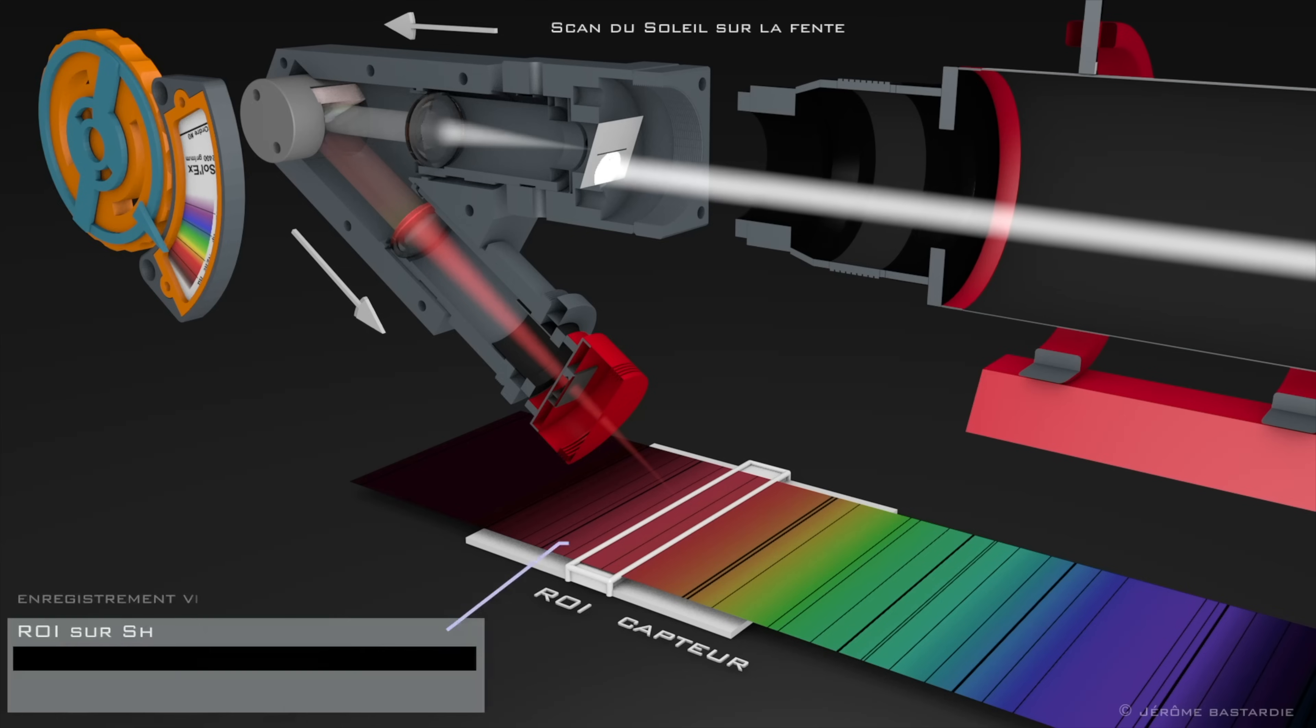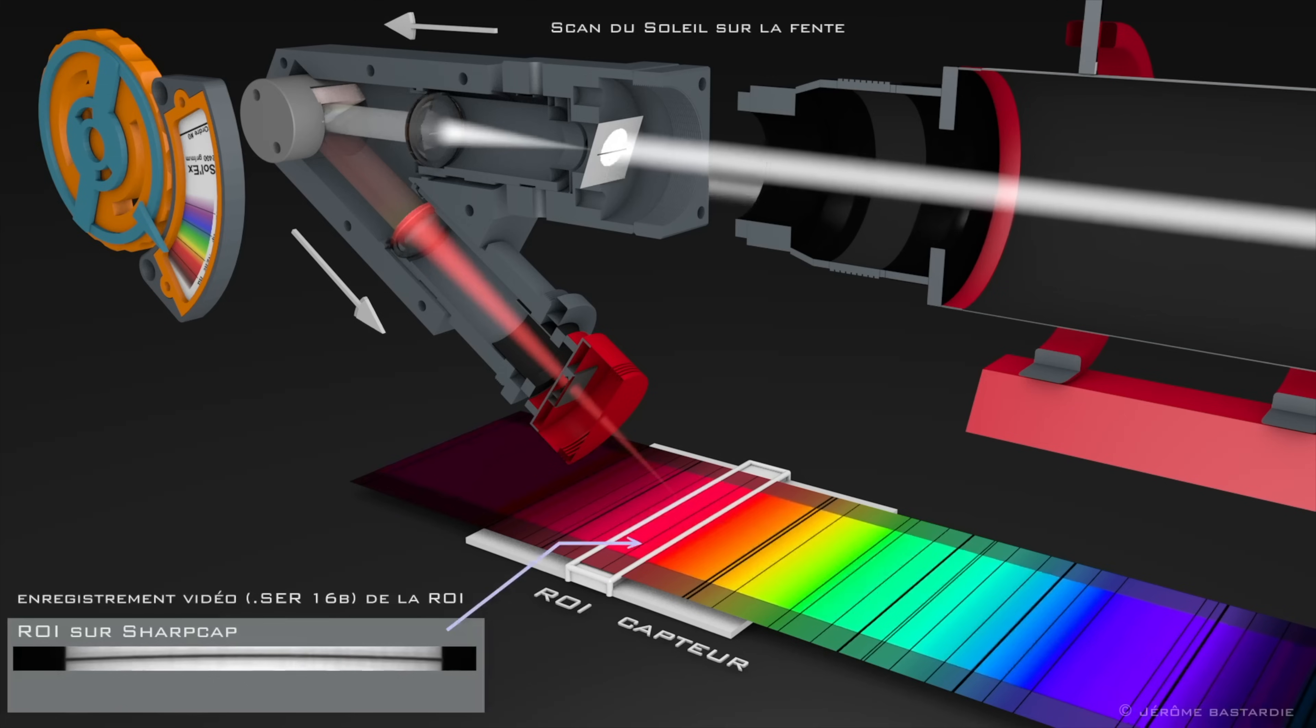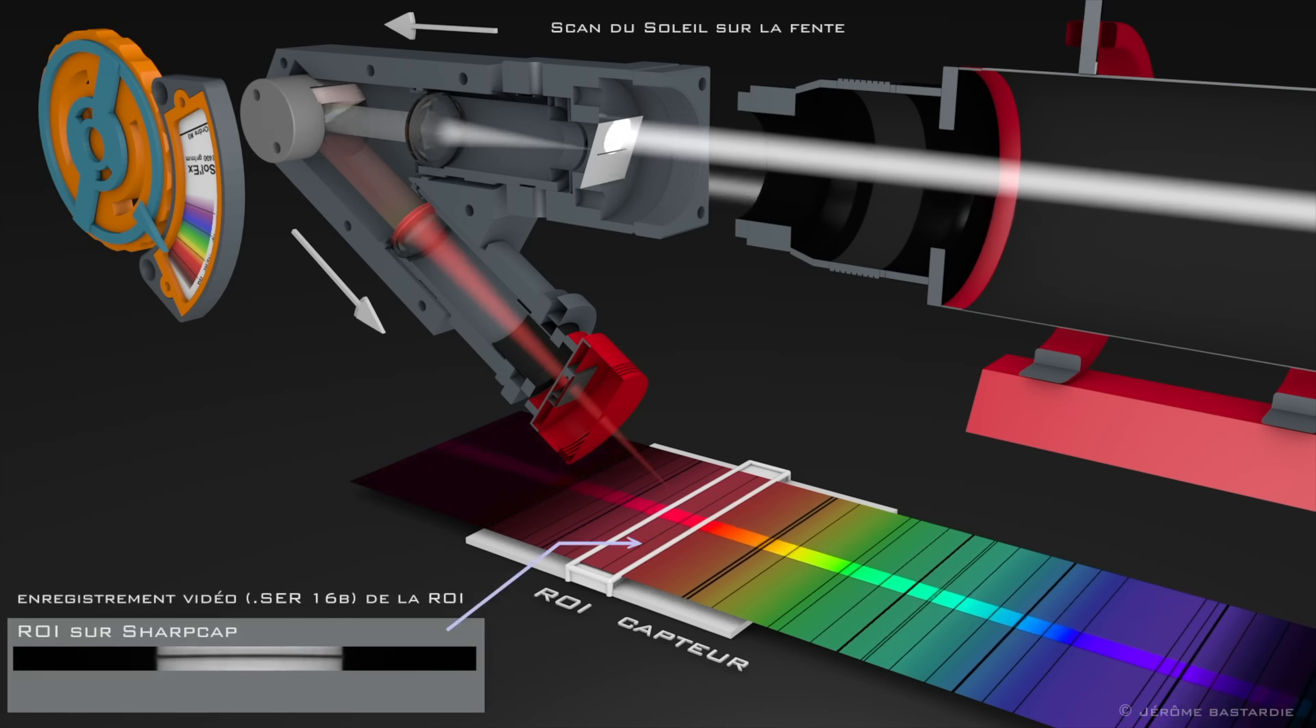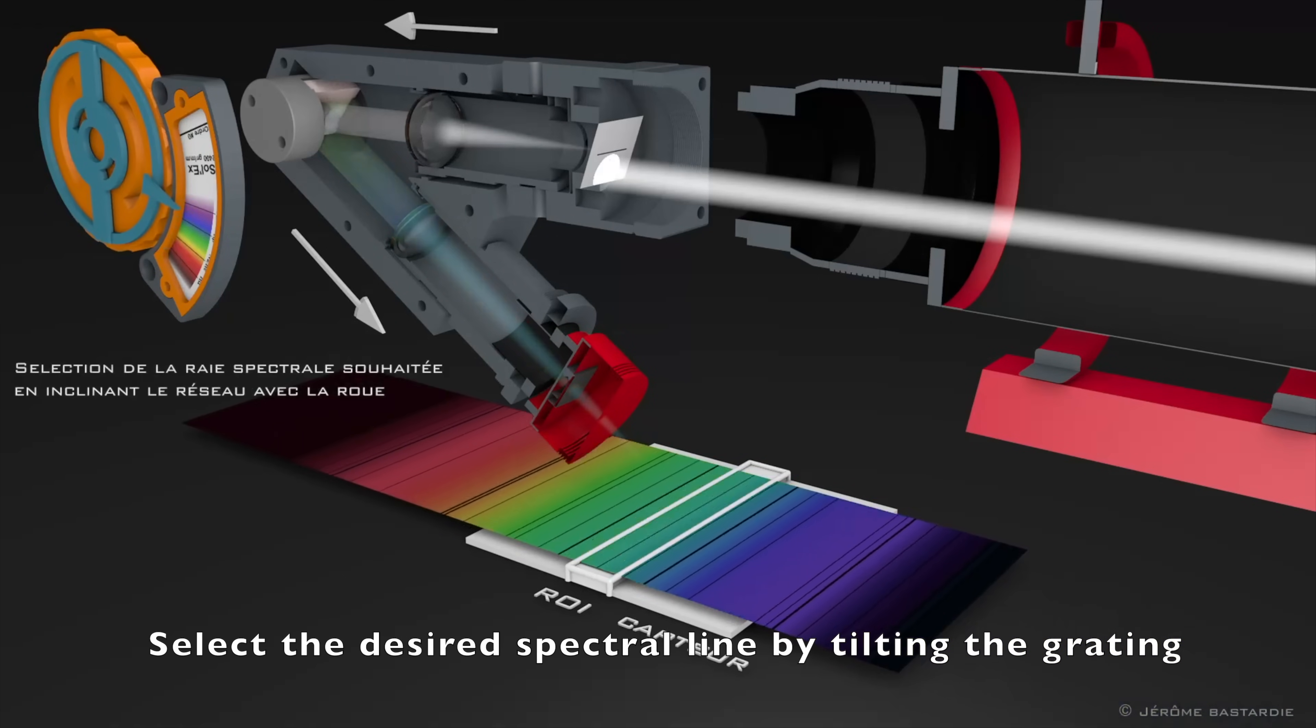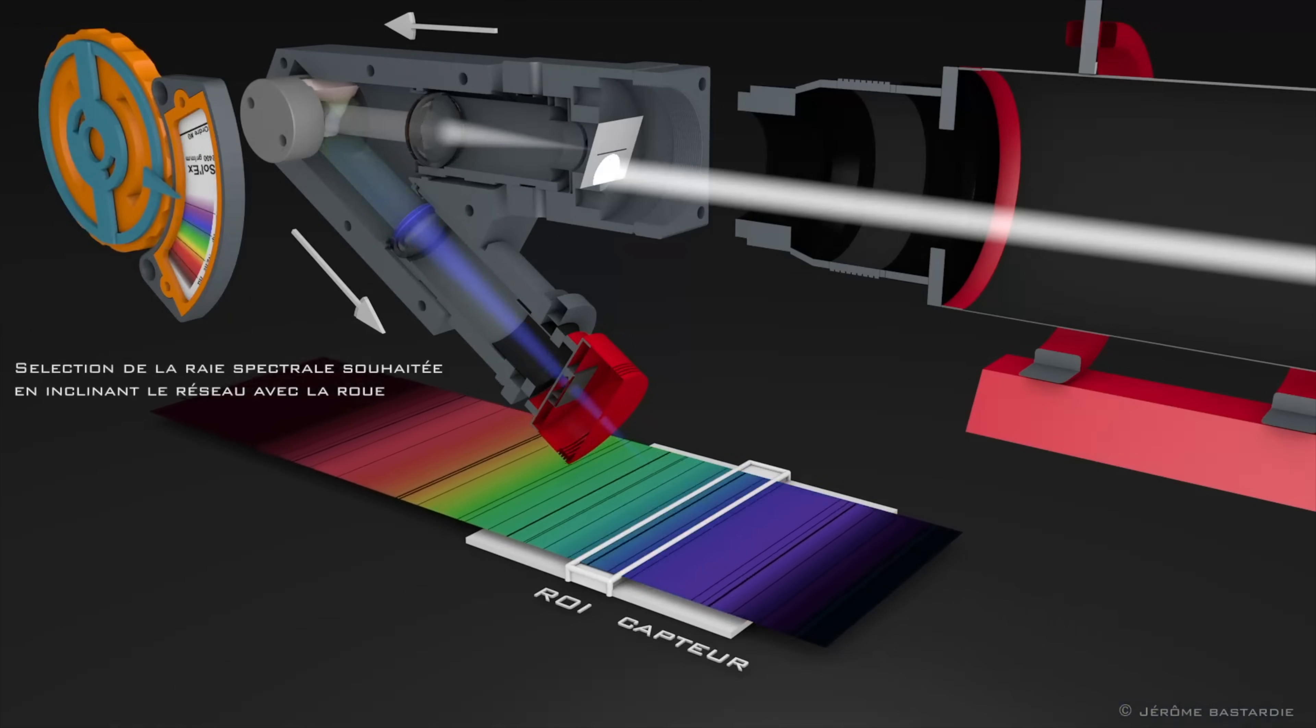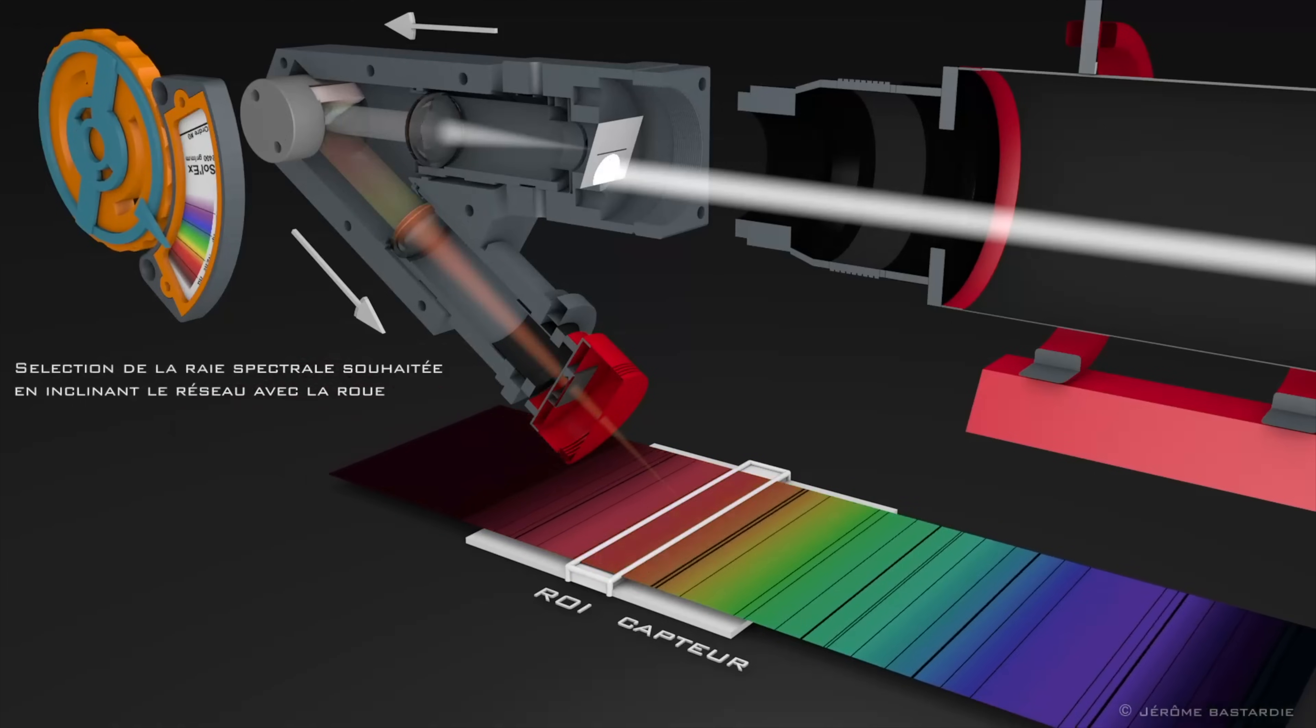A spectroheliograph operates by scanning the Sun's disk and isolating light of a specific wavelength using a combination of slits, a diffraction grating, and a photographic detector. Here's how it works. First sunlight enters through the entrance slit. The slit restricts the field of view, allowing only a thin slice of the Sun's image to enter.